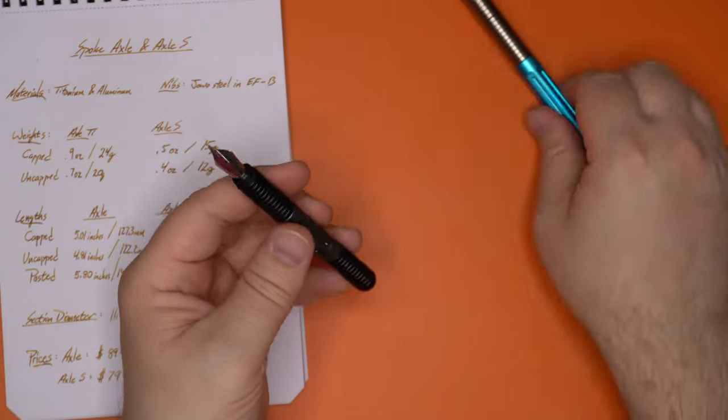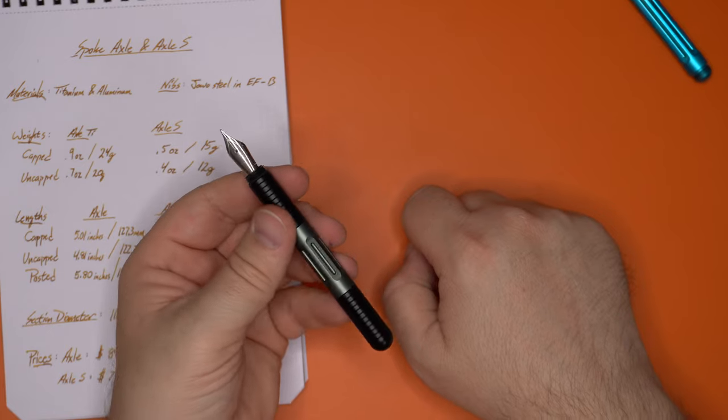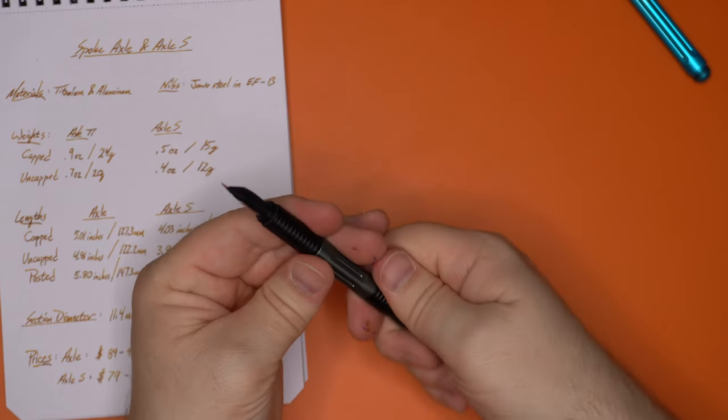And so it rests very comfortably there on the web of my hand. And all of this is the same, you know, widths and diameters as this, because very similar stuff. Also same Yovo number six nib, small pen, big nib. Got to love that. All right.